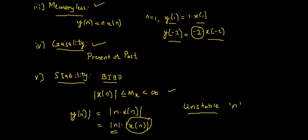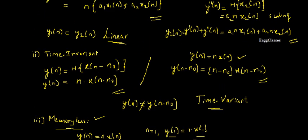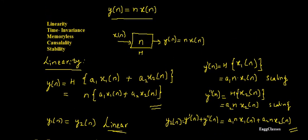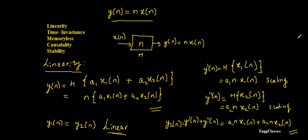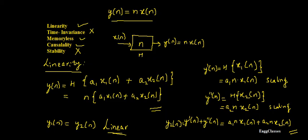To summarize the five properties tested for y(n) = n·x(n): the system is linear, time variant, memoryless, causal, and unstable. Thanks for watching.